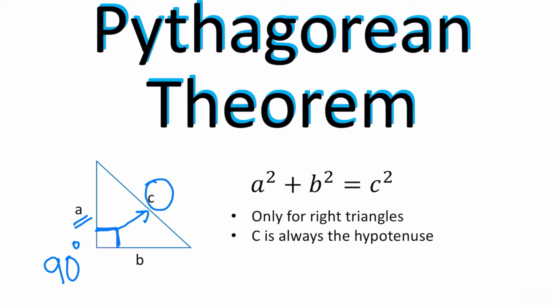The other two is what we call the legs. The legs don't matter if you label them A or B because either way you're going to be finding the sum of those squares, but the important one is the one that you're going to label C.